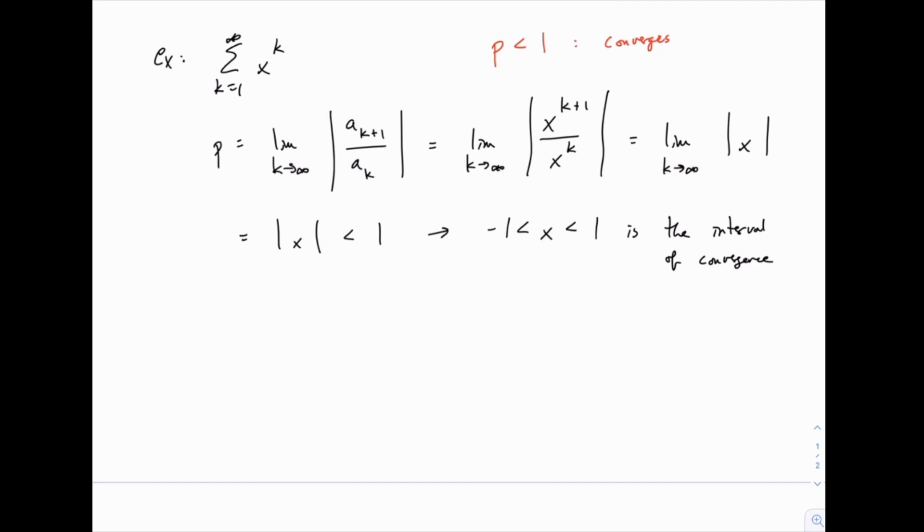Almost. We aren't quite done yet, because if you remember, when p equals 1, this test is inconclusive. We know this series converges for all values of x greater than negative 1 and less than positive 1. We know it diverges for all values of x less than negative 1 or greater than positive 1. What we don't know is whether it converges or diverges when x equals 1 or equals negative 1. Because the ratio test is inconclusive when p equals 1, meaning when x equals 1 or negative 1, we have to test those endpoints separately. You'll see that with all these problems. You set up the ratio test and you get a conclusion which gives you the interval, but what we don't know yet is what happens at the boundaries.